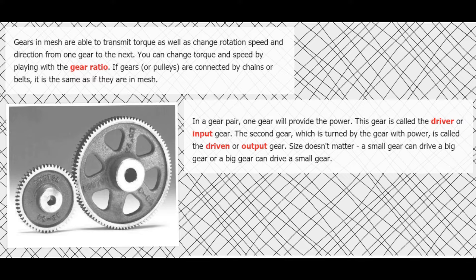A little bit of terminology: when you look at a gear pair, one gear will be providing the power — like a crank gear at the end of your crankshaft being spun by your engine. That would be the input gear. It's often called the driver, but I find it hard to keep driver and driven separate, so I usually stick with input and output. The one that provides the power is the input, and the one that receives the power is the output gear.